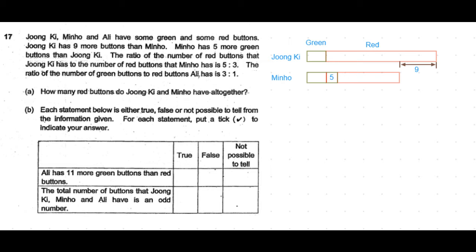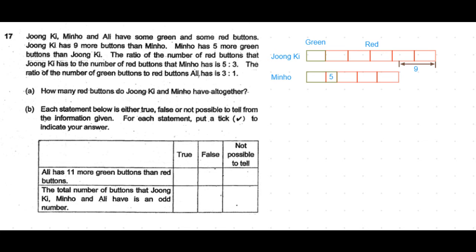Next, the ratio of the number of red buttons that Junki has to the number of red buttons that Minho has is 5:3. So the remaining portion — the red — let's make it into five parts for Junki and three parts for Minho. So we have five units of red buttons for Junki and three units of red buttons for Minho.